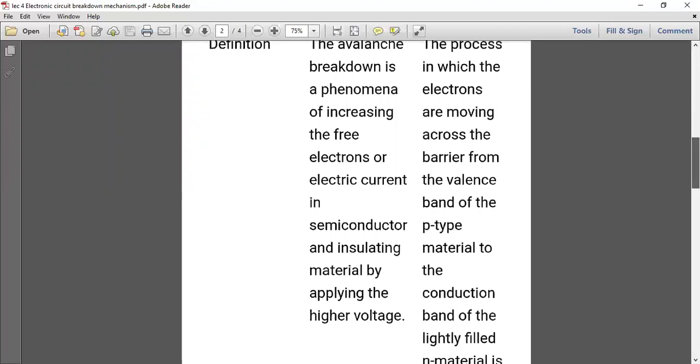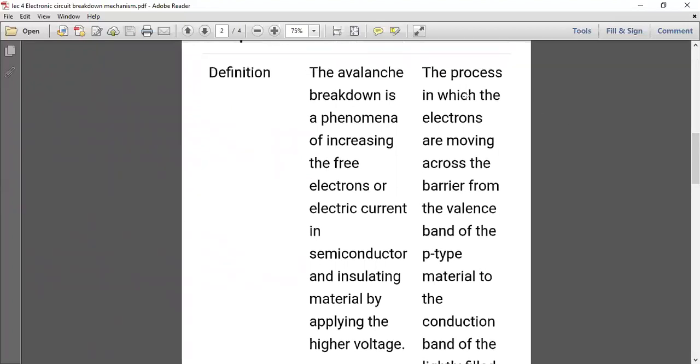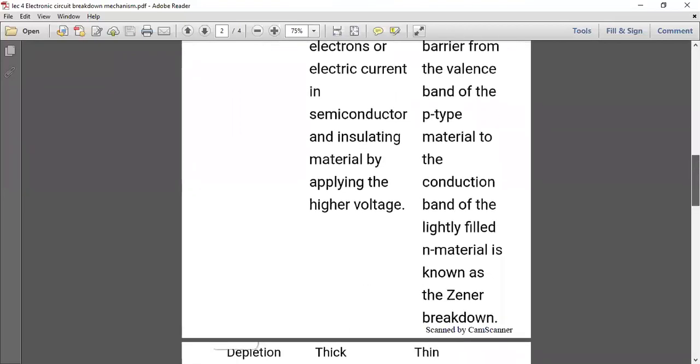But in case of zener breakdown, the process in which the electrons are moving across the barrier from the valence band of the P-type material to the conduction band of the lightly doped N-type material is known as zener breakdown. So these are the simple definitions of avalanche breakdown and zener breakdown.